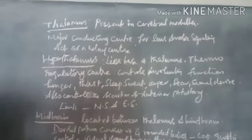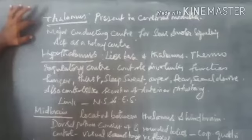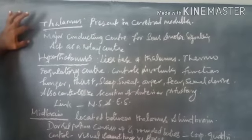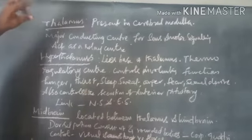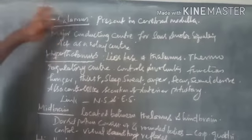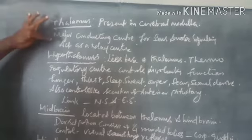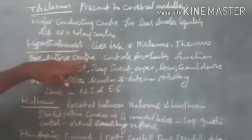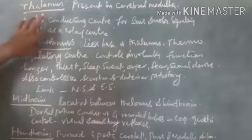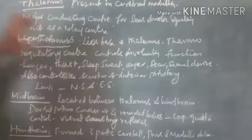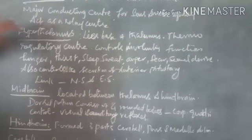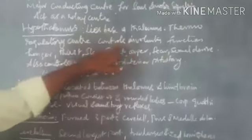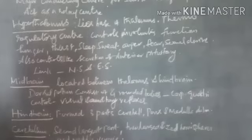The thalamus is present in the cerebral medulla and is the major conducting center for sensory and motor signaling. It acts as a relay center. The hypothalamus lies at the base of the thalamus.